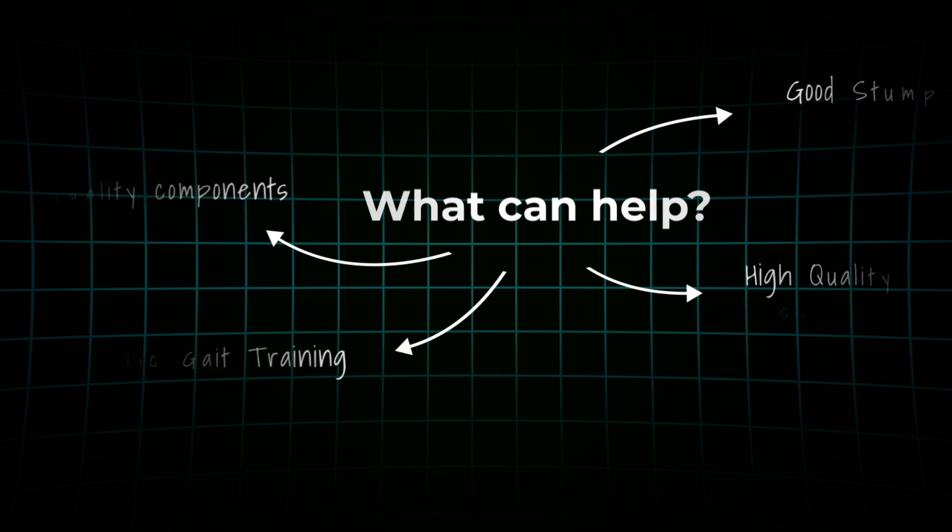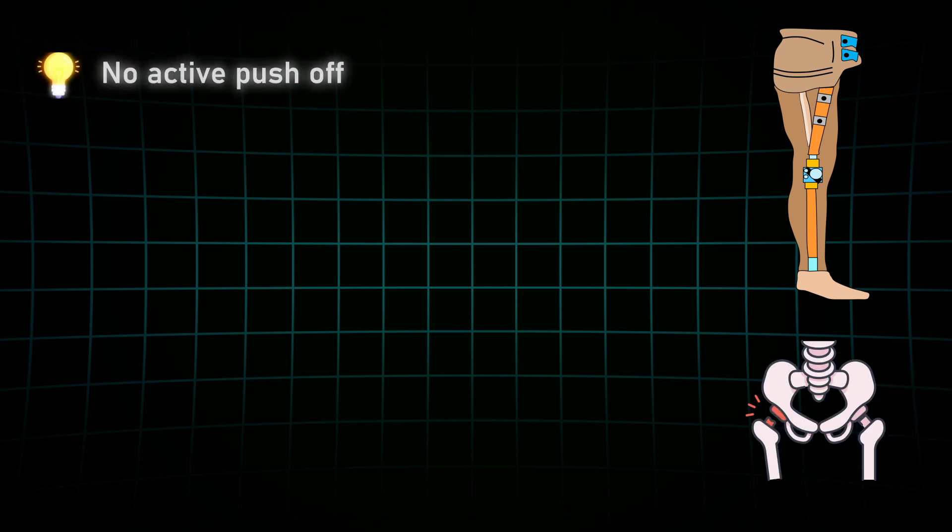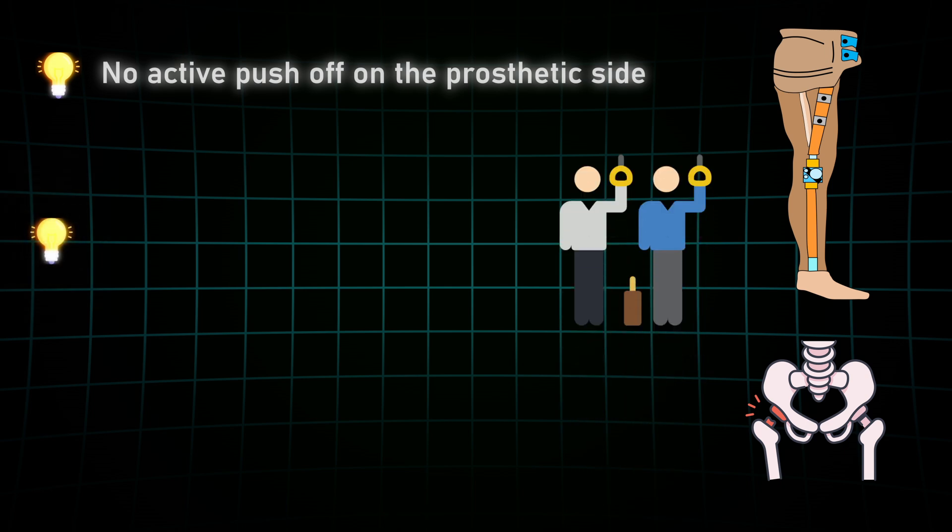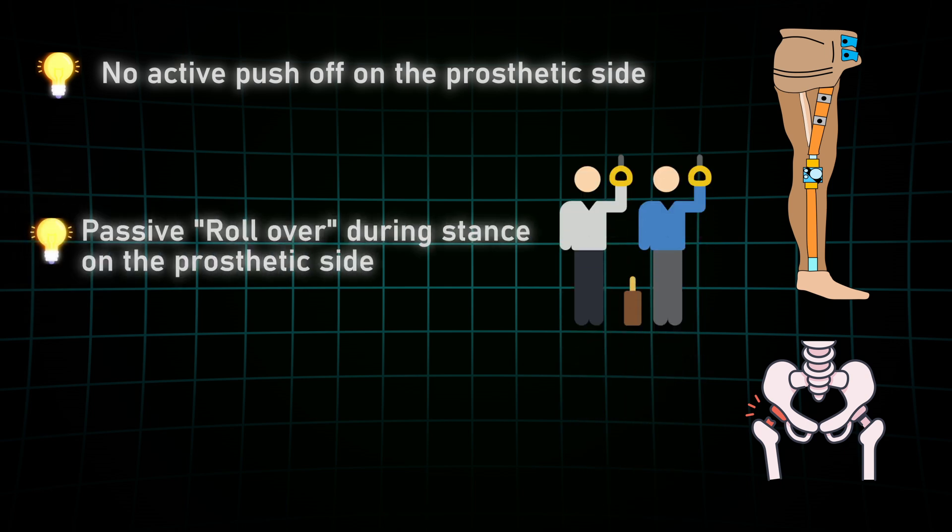Now, hip disarticulations. At this point, the user has lost the ability to actively push off on the prosthetic side. During stance on the prosthetic side, they're essentially a passive passenger, relying on the prosthetic system to bring them forward. Here's something surprising.